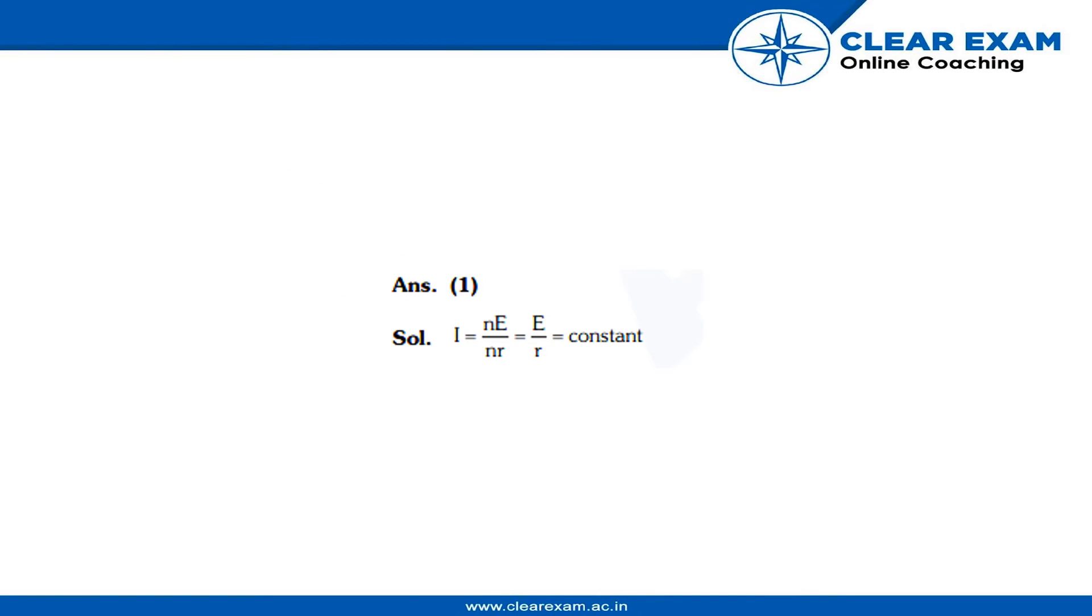So the current is given as i equals n times e divided by n times r. Because there are n identical cells which have voltage e and the resistance, they have internal resistance of r, so we will just add those n resistances and n voltage of n identical cells. Which will give us the value e by r, which is a constant, because resistance is not going to change. Similarly for the voltage, it will never change, so it will be a constant.